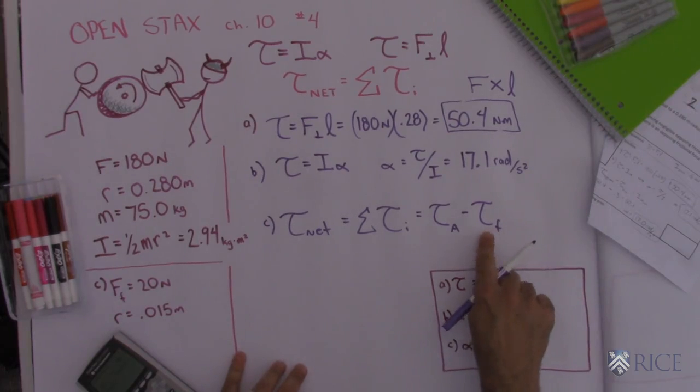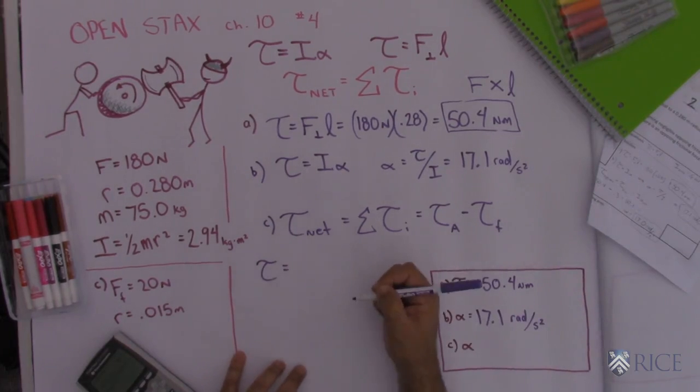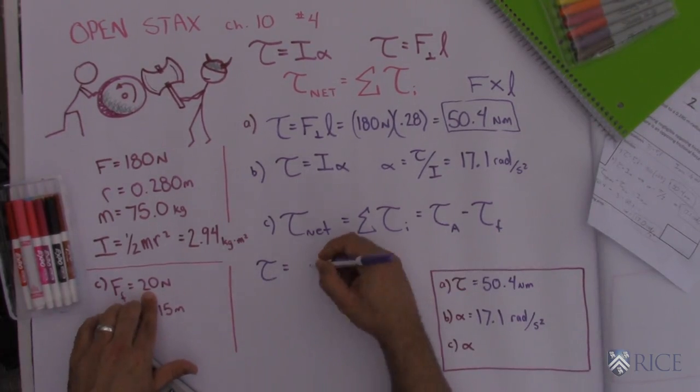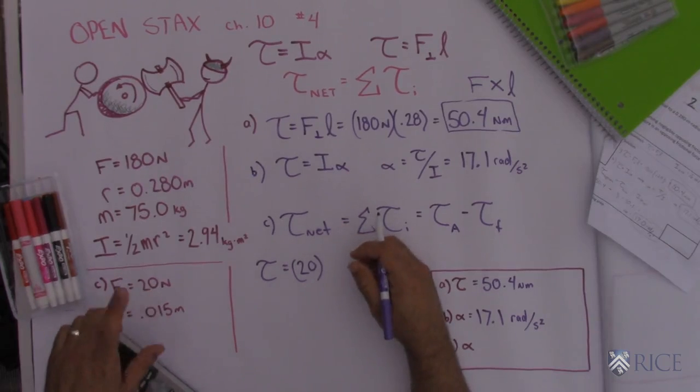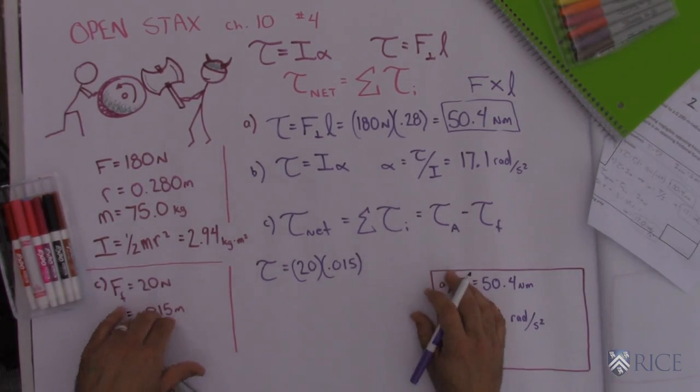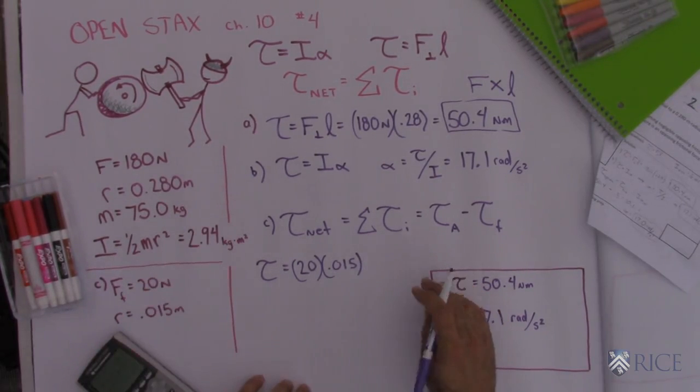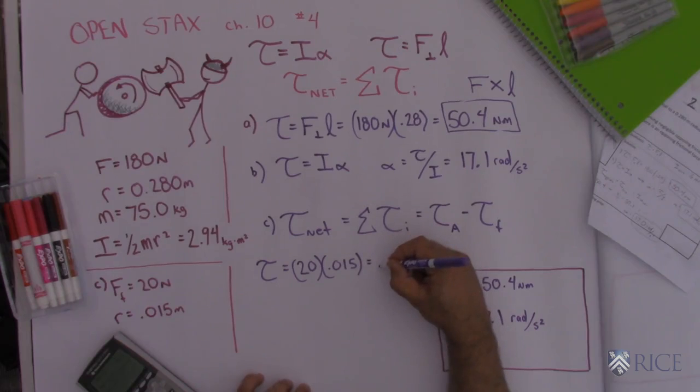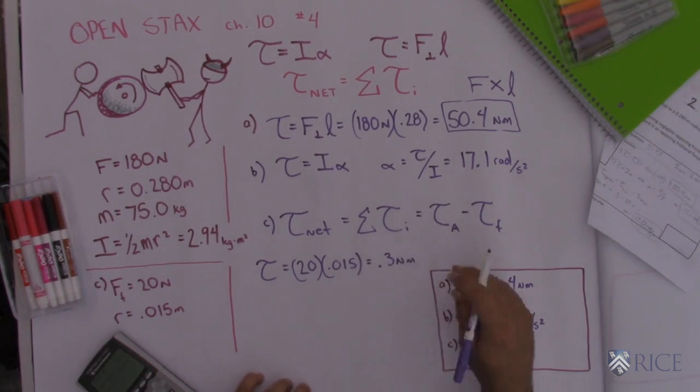All right, so I find that frictional torque the same way. It's just going to be how much force is applied. And they told us that frictional force was 20 Newtons. And I have to multiply that by the lever arm, which is 0.015 meters. I had to convert the centimeters to meters there. So I get this frictional torque, and it's a really small amount. It's only 0.3 Newton meters.